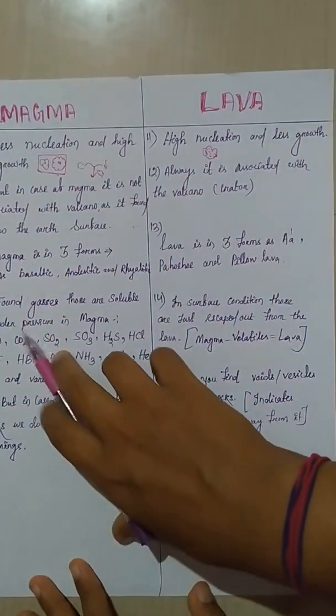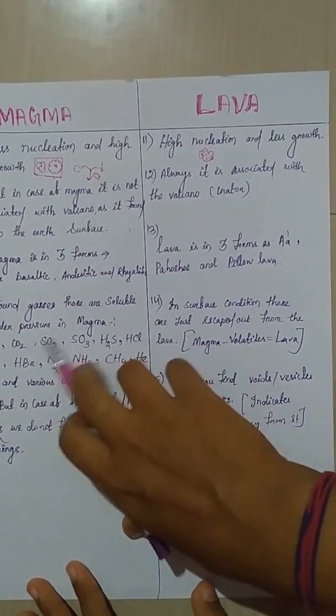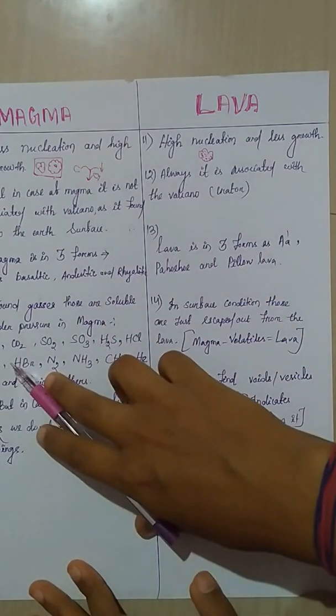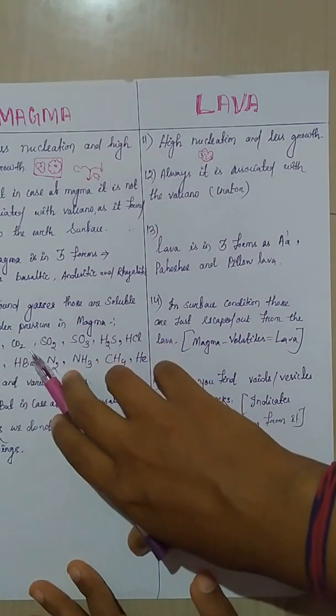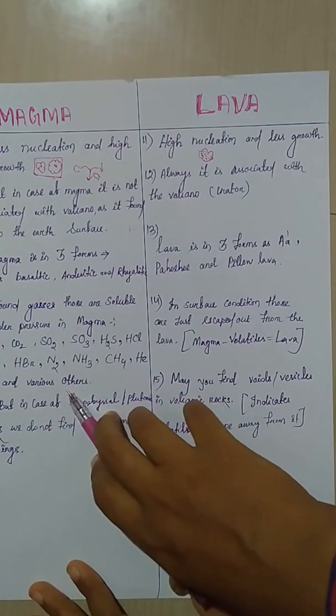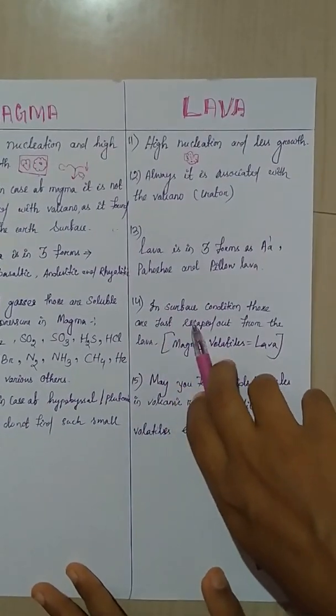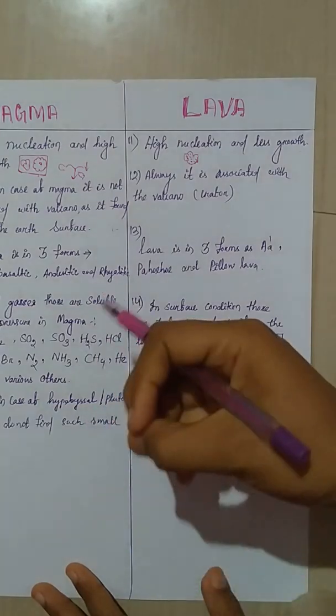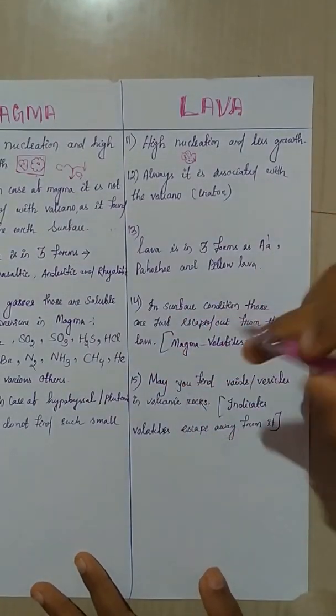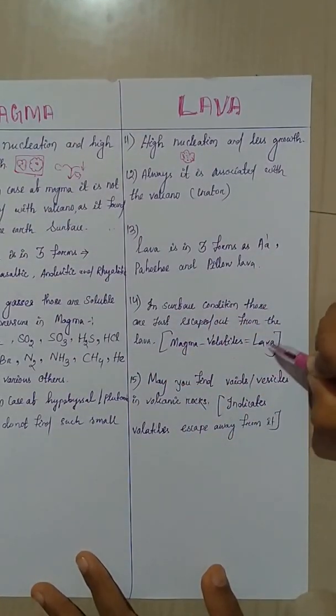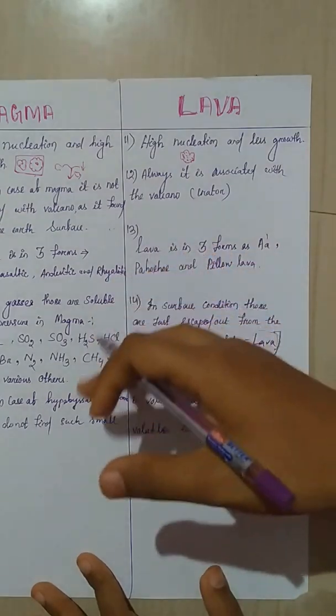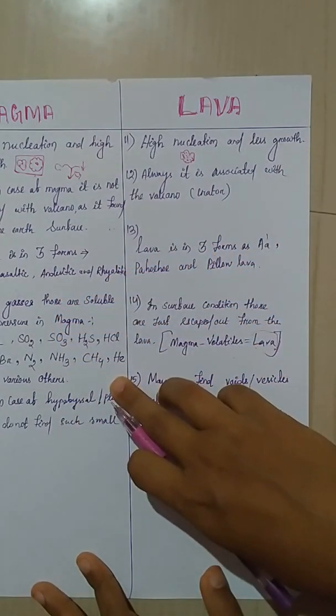In case of magma, we found gases that are soluble under pressure. Like gases like H2O, carbon dioxide, SO2, ammonia, methane, helium, argon, etc. But in case of lava, in surface condition, those are just escaped out from the lava. You have to remember just one thing: magma minus volatiles gives rise to lava. Remember the analogy of that closed Sprite bottle.